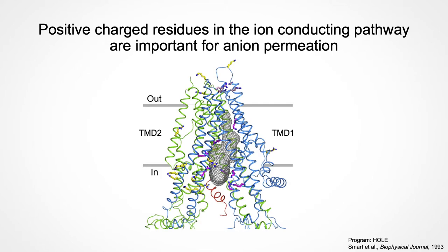We know that CFTR strictly selects against cations while allowing anions to efficiently pass through — but how it achieves this function structurally is important to understand. When we look at the CFTR structure, what is immediately obvious is that there are many positively charged residues in the transmembrane region. Thanks to mutagenesis and electrophysiological studies done in the field, we can map the residues which are important for ion permeation of CFTR, shown in magenta here. From those observations, we can see that CFTR's ion-conducting pathway, shown in the green mesh here, acts as a positively charged reservoir to allow anions to efficiently pass through while strictly selecting against cations.